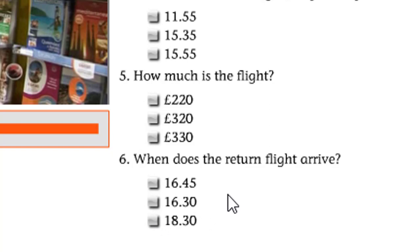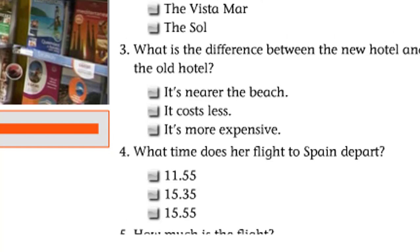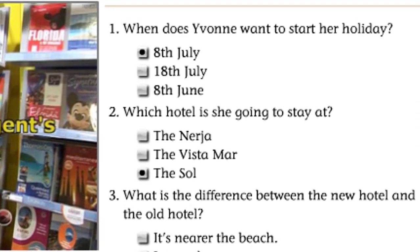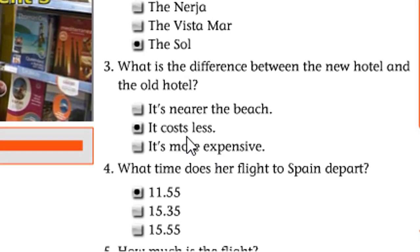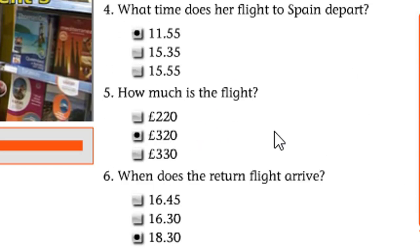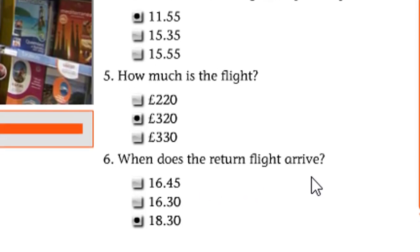هذه هي الأوقات. راح نشوف الآن الأجوبة. إذن في الثامن من تموز. والسؤال الثاني: The Seoul Hotel. والسؤال الثالث: It costs less — يكلف أقل. والسؤال الرابع: 15:55. والخامس: كم تكلف الرحلة؟ £320. وأيضاً متى تصل الرحلة؟ 18:30.